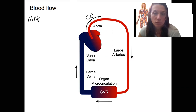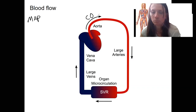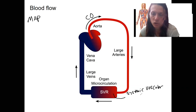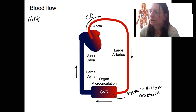Cardiac output is the volume that is put out from the heart in a minute, and that's used to talk about cardiovascular function. Systemic vascular resistance is all the resistance that the blood encounters during circulation. It depends on the length of the tubes, what the tubes are, the constriction or dilation of the tubes, and the viscosity of the blood.